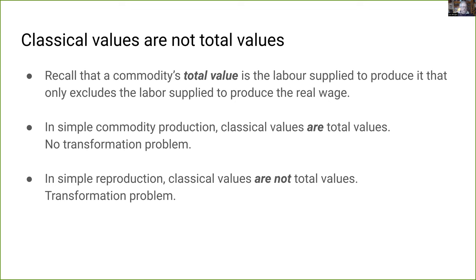Classical values measure something else — they tell us how much labor is supplied to produce commodities if workers did not supply tribute to capitalists. Both measures of value are useful; they just answer different questions about the same economy. At the beginning we defined total value. In simple commodity production — when there are no capitalist households and no profits on stock, to use Adam Smith's phrase — classical values do satisfy the definition of total values. As everyone agrees, including mainstream economists, equilibrium prices are proportional to values under those assumptions, so there's no transformation problem.